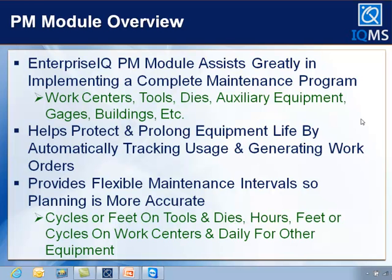We'll keep track of the actual usage and not just do a daily PM — for example, every 90 days change the oil in a work center or clean the tool. We actually keep track of equipment usage. You can also do daily for things we don't track usage against, and it'll say, for instance, it's been 90 days since you swept the parking lot, and you'll create a work order for that.